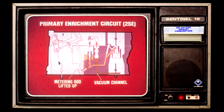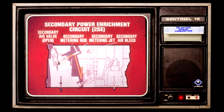There is both a primary and secondary power enrichment circuit in the 2SE. In the primary circuit, when the driver accelerates, intake manifold vacuum decreases, and the spring forces the power piston up. As the power piston rises, the metering rod is lifted out of the main metering jet, allowing additional fuel into the main well.